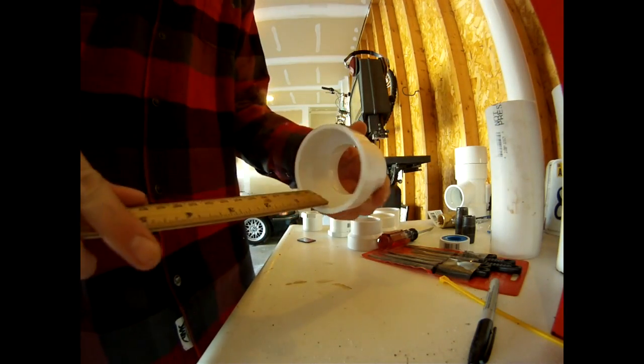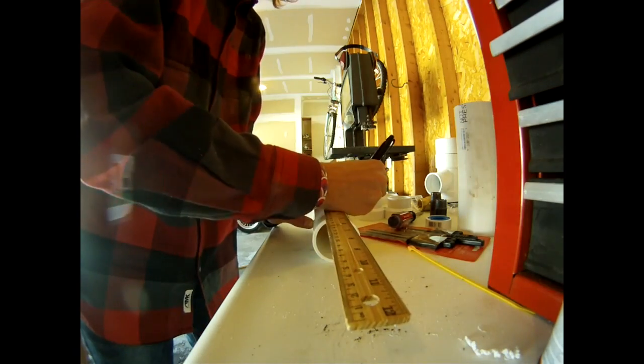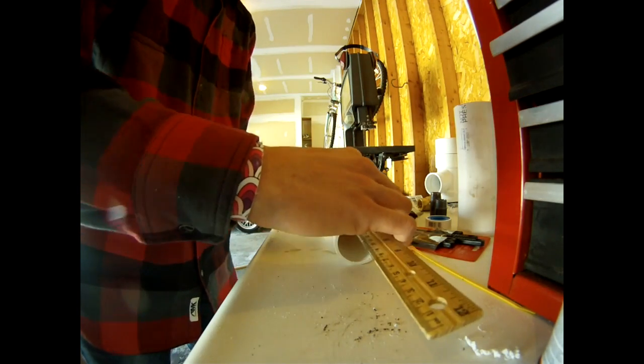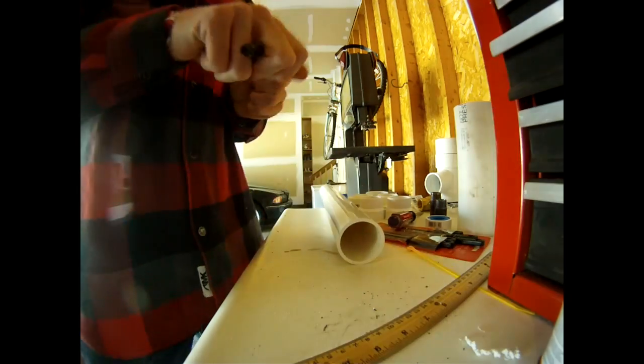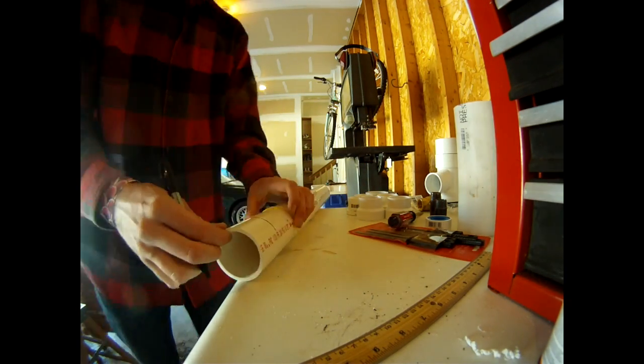You're going to need a small section of 2 inch diameter PVC pipe to fit into the reducing bushing. Measure that out so you can cut it with a saw. It helps to use something that bends in order to make your lines straight.